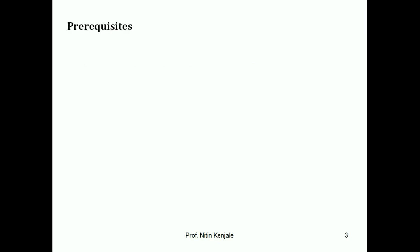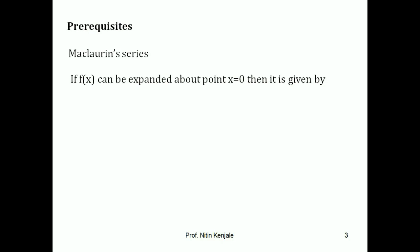Now we will see some prerequisites to learn this topic. We will see what is the Maclaurin series. If a function f(x) can be expanded about the point x equal to 0, then its expansion is given by: f(x) equals f(0) plus x into f'(0) plus x² by 2 factorial into f''(0) plus x³ by 3 factorial into f'''(0) and so on. The nth term of this series will be x^n upon n factorial into f^n(0).